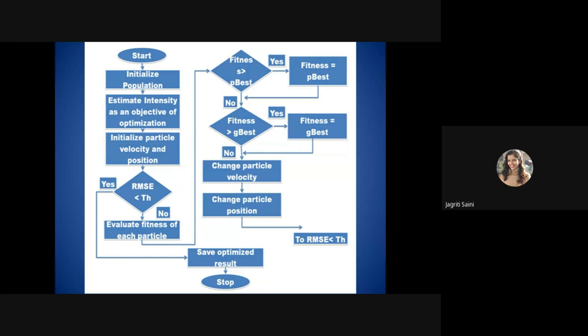The flowchart shows: initialize population, define objective function, initialize velocity and position values. With RMSE as objective function, set a threshold — for example, RMSE below 0.5. Evaluate fitness of each particle, update pBest and gBest accordingly, then update particle velocity and position after every iteration. Compare RMSE to the threshold — if achieved, stop; otherwise, go back to initial conditions and change parameters.